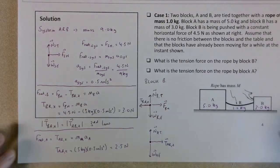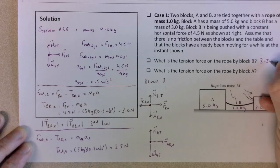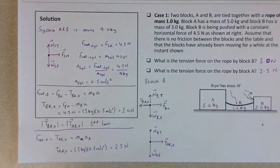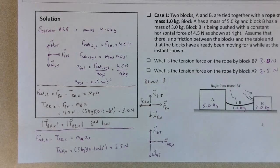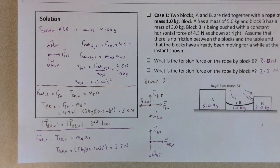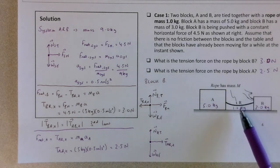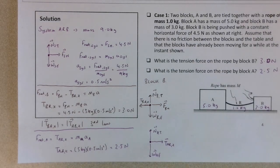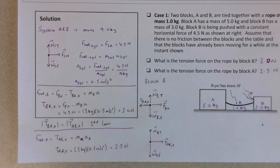The answers are 3 Newtons and 2.5 Newtons. This highlights that when a rope has mass and is not massless, the tension at either end is not the same — tension is not transmitted undiminished. Different tension forces exist at each end, because we must account for the rope's own weight and the fact that an accelerating rope requires a net force. We've ignored the vertical components and focused only on horizontal components for this problem.